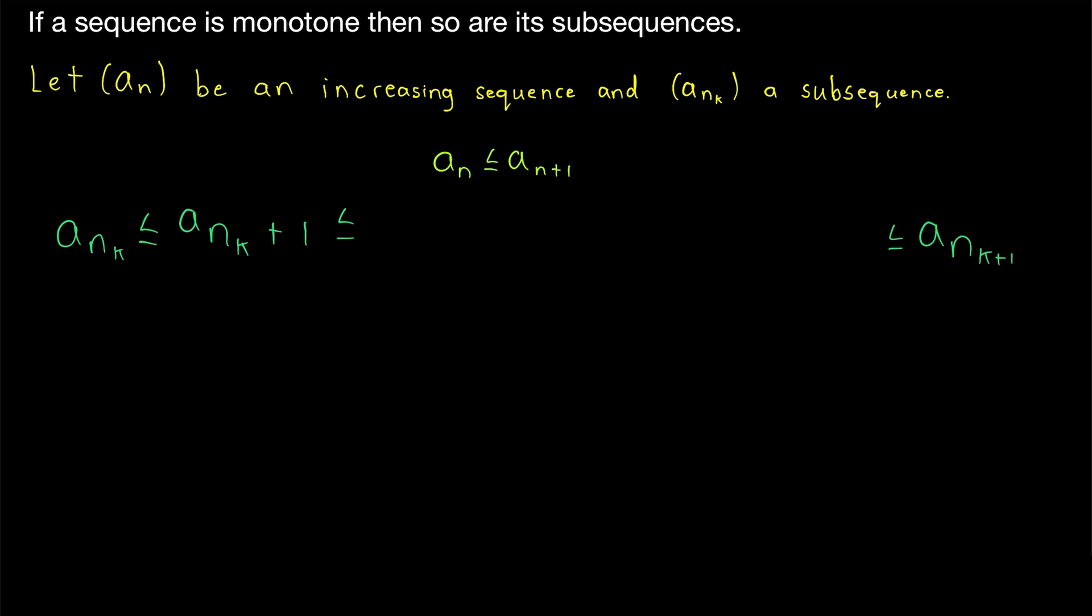Then, of course, by the same logic, ank plus one is less than or equal to ank plus two. And we could continue this string of inequalities as long as we like. We know in a subsequence, if this term comes after this one, then this term also comes after this one in the original sequence. And so, this string of inequalities will eventually arrive at ank plus one, the next term of the subsequence. And of course, the important consequence of this string of inequalities that we're actually interested in is the fact that ank is less than or equal to ank plus one.